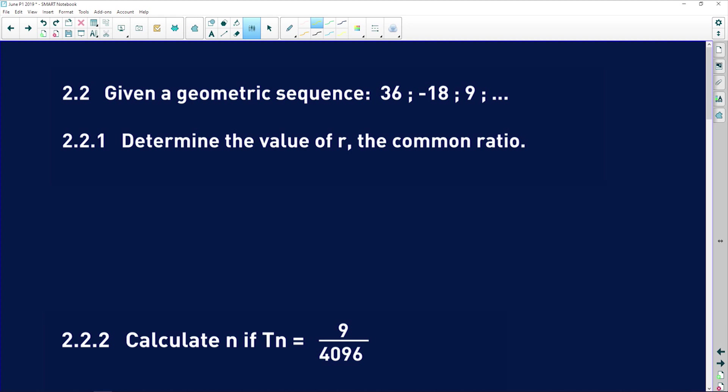Okay, let's take a look at question 2.2, which is a geometric sequence. So let's just jump right into it. Given a geometric sequence: 36, negative 18, 9, etc. Question 2.2.1 says, determine the value of r, the common ratio.